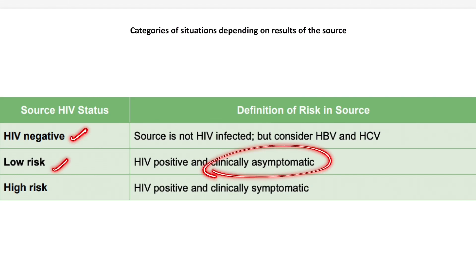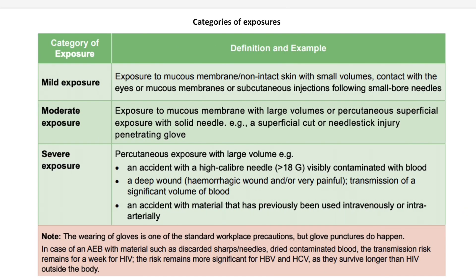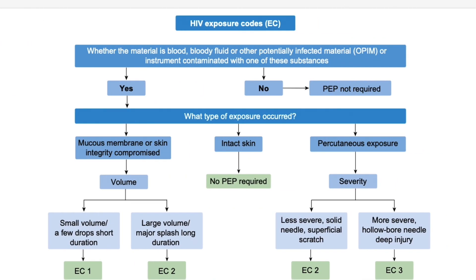Regarding HIV status categories: negative is low risk; clinically asymptomatic is low risk; clinically symptomatic means the risk is very high. We use exposure codes (EC). If the exposure is to mucous membrane or skin with compromised integrity and the volume is small — just a few drops for a short duration — we give Exposure Code 1 (EC1). If it is a large volume with a major splash for a longer duration, the code is Exposure Code 2 (EC2). If the skin is intact, no PEP is required.